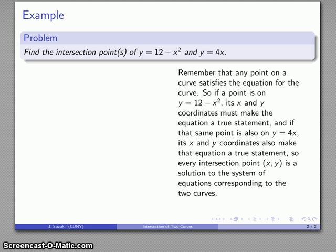So that means whatever our intersection point is, it has to correspond to a solution to the system of equations y equals 12 minus x squared, y equals 4x. Which means that I can find that intersection point by solving this system.